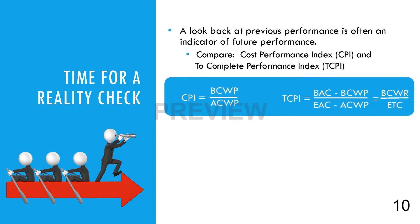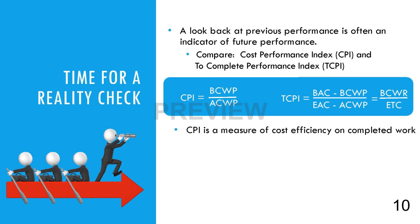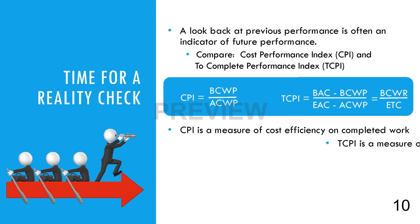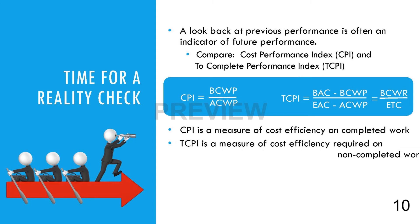The formula for reviewing the past uses the CPI, which is determined by dividing the BCWP by the ACWP. The formula for the TCPI uses the BCWR as the numerator and the ETC as the denominator, predicting future performance. The CPI is a measure of cost efficiency on completed work, while the TCPI is a measure of cost efficiency required on non-completed work in order to achieve the EAC.